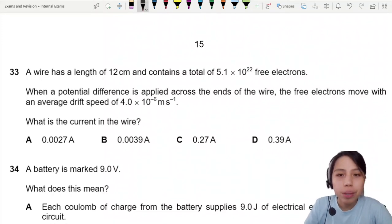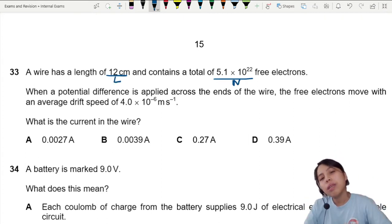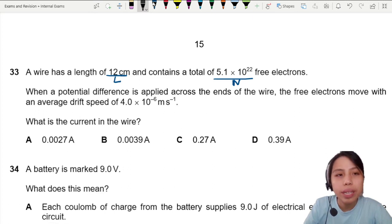Wire has a length of 12 cm and contains a lot of electrons. This is what we call the number of free electrons. Potential difference is applied across the end of the wire. Oh wait, let me draw a picture first.